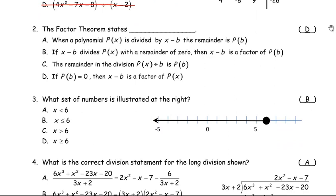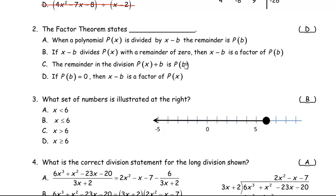For number two, the factor theorem — and d is the correct answer — states: if p of b equals zero, then x minus b is a factor of p of x. Answer b is close but incorrect because it says 'x minus b is a factor of p of b' — the polynomial is a function of x, not of b. Answer a is actually the remainder theorem: when a polynomial p of x is divided by x minus b, the remainder is p of b. Answer c is just a made-up incorrect statement.